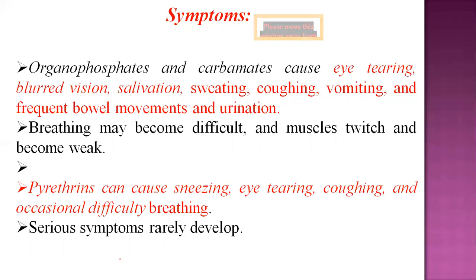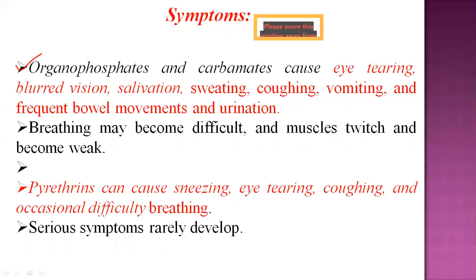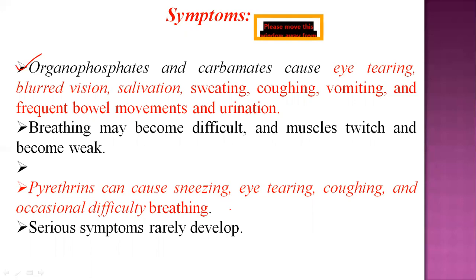The organophosphate and carbamate groups cause symptoms including eye tearing, blurred vision, excessive salivation, vomiting, frequent bowel movements, urination, breathing difficulty, and muscle twitching with weakness. Additionally, pyrethrins cause sneezing, eye tearing, coughing, and occasionally difficulty breathing.